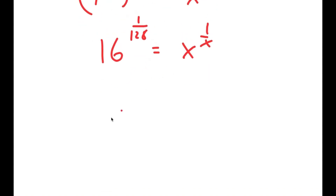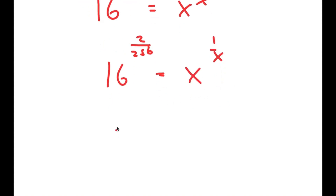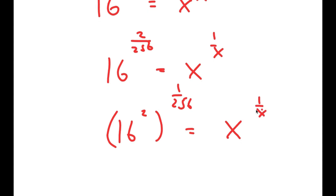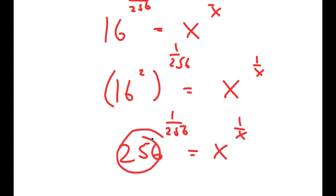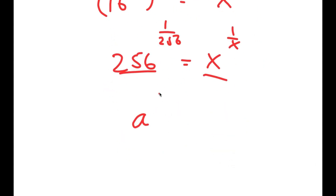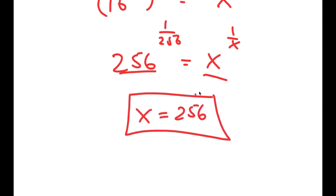So I'm going to repeat it once again. I get 16 to the power of 2 over 256, which is the same thing as 16 squared to the power of 1 over 256, equal to x to the power of 1 over x. And now 16 squared is equal to 256, so I get 256 to the power of 1 over 256 is equal to x to the power of 1 over x. Notice that these numbers are now the same — this is in the form a to the power of 1 over a equals b to the power of 1 over b, meaning a equals b. So x is equal to 256.